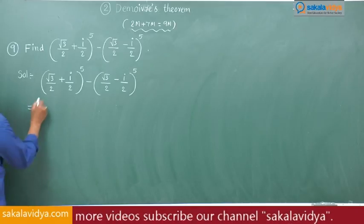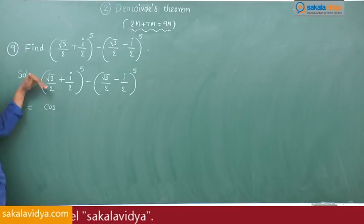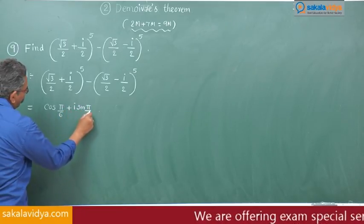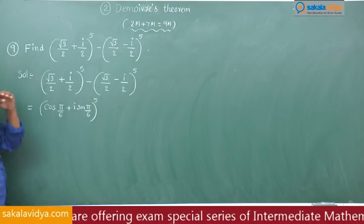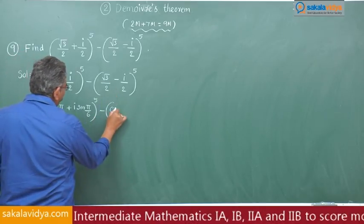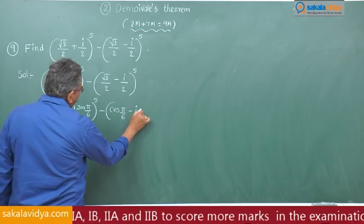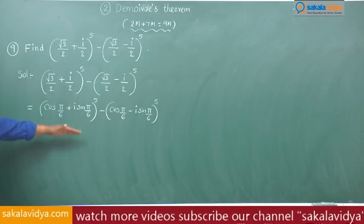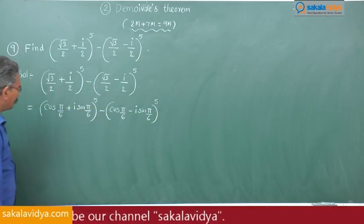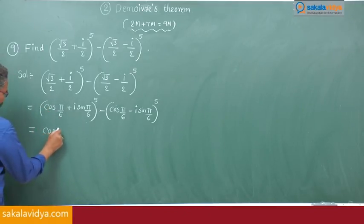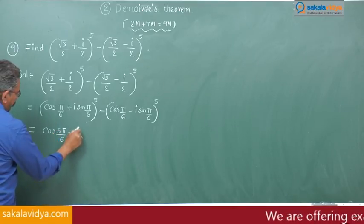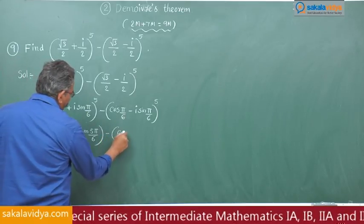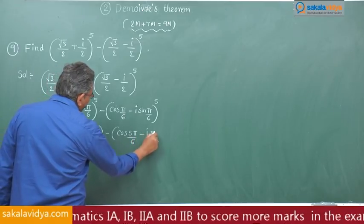Note that cos 60° = 1/2 while √3/2 = cos 30° = cos(π/6). So we can write the first term as [cos(π/6) + i sin(π/6)]^5 and the second term as [cos(π/6) − i sin(π/6)]^5. Applying De Moivre's theorem to both terms gives cos(5π/6) + i sin(5π/6) minus cos(5π/6) − i sin(5π/6).